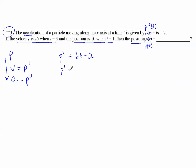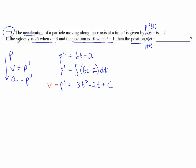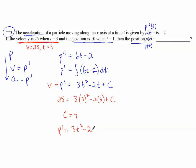P prime from P double prime means taking the antiderivative of 6T minus 2 with respect to T. So P prime equals 3T squared minus 2T plus C. To find C, remember that P prime is the same as V, the velocity. They told me the velocity is 25 when T equals 3. So substituting: 25 equals 3(3 squared) minus 2(3) plus C, and solving gives C equals 4. So my velocity equation, P prime, is 3T squared minus 2T plus 4.